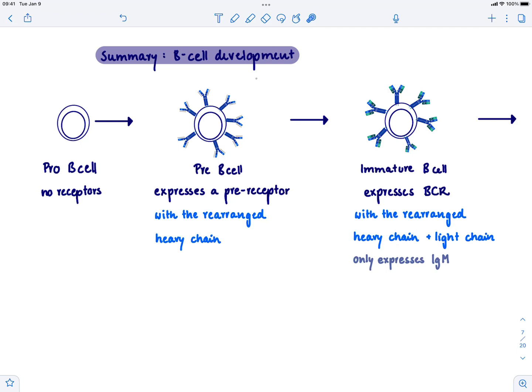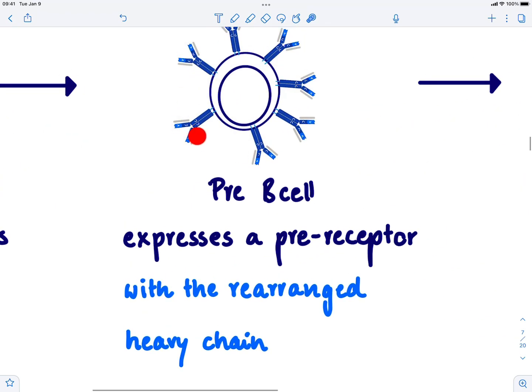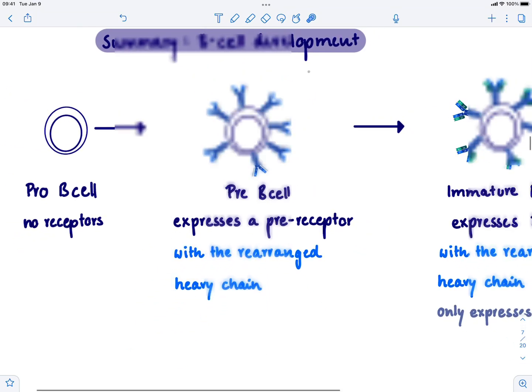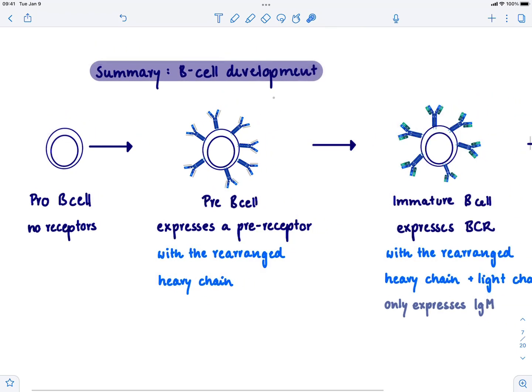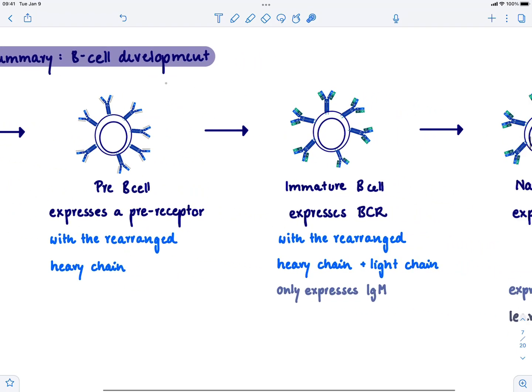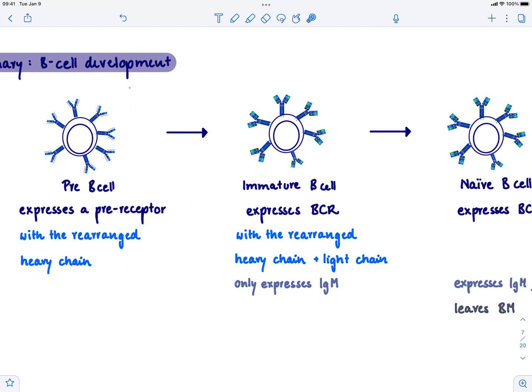Then it becomes a pre-B cell because it rearranges the heavy chain and expresses this pre-receptor with a surrogate light chain—basically a placeholder for the light chain, otherwise it would fall apart. Now it's a pre-B cell, which makes more sense—'pre' means almost there. The next stage is the immature B cell.